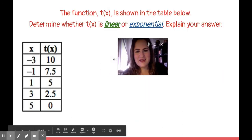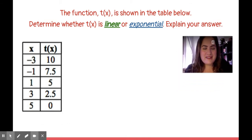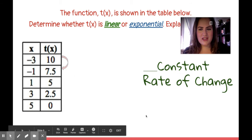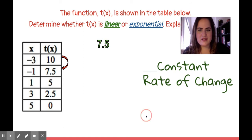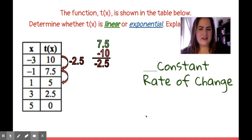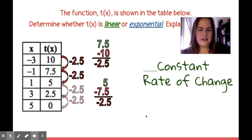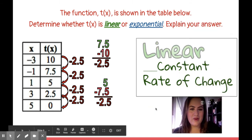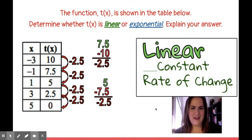All right, let's do some practice problems. Here we have a table. Linear or exponential? Explain your answer. Either way, I know I'm going to be talking about whether or not there's a constant rate of change. How do I get from 10 to 7.5? I'm going to do 7.5, take away 10, and I get minus 2.5. I can do this again from 7.5 to 5. I subtract, minus 2.5. So what do we think? Linear or exponential? If you said linear, you're correct. It's because there is a constant rate of change.